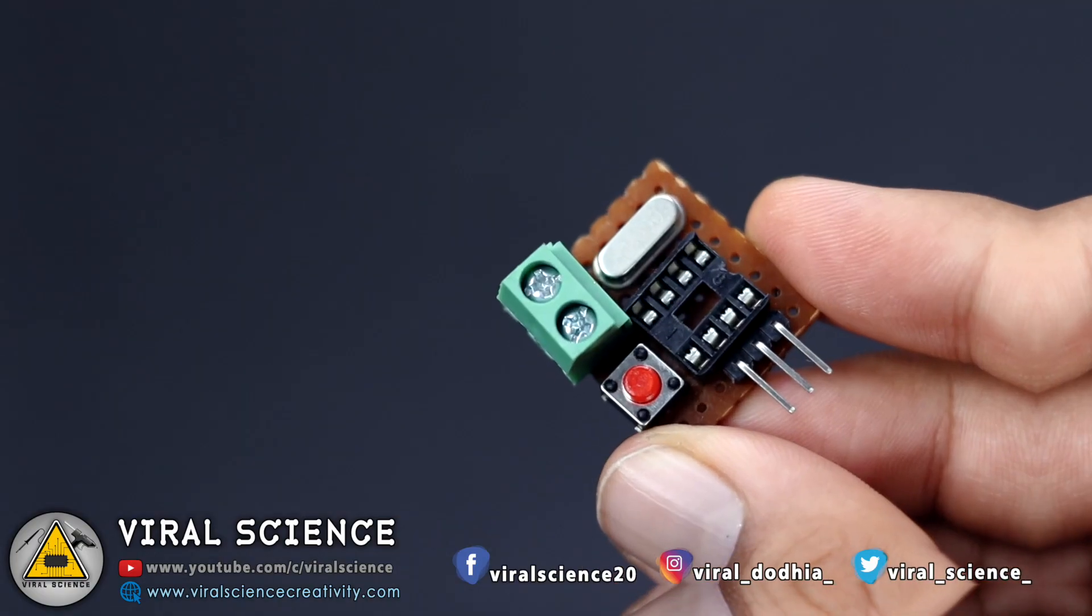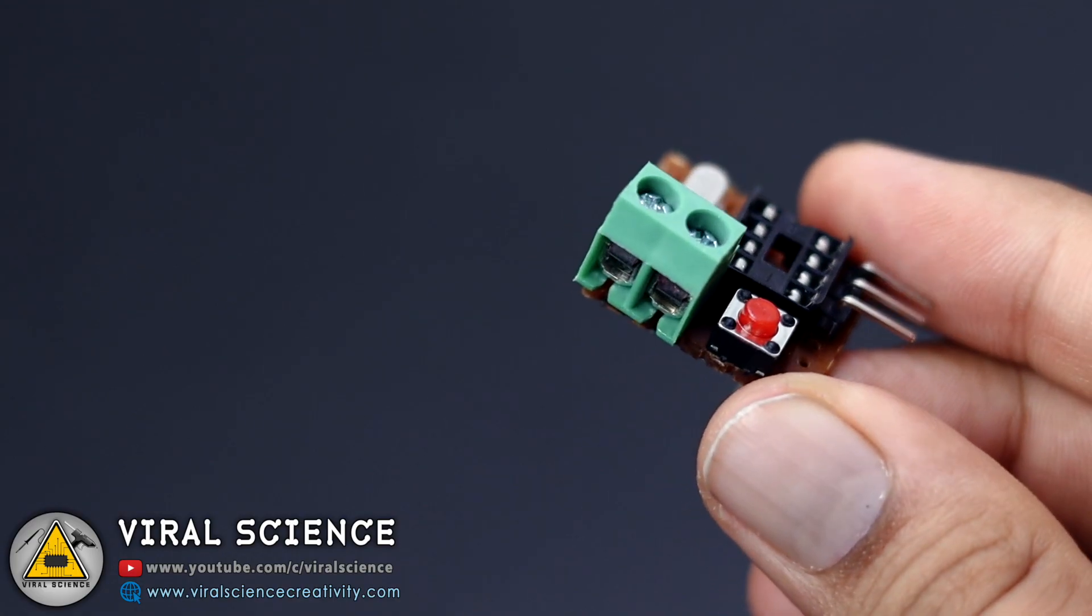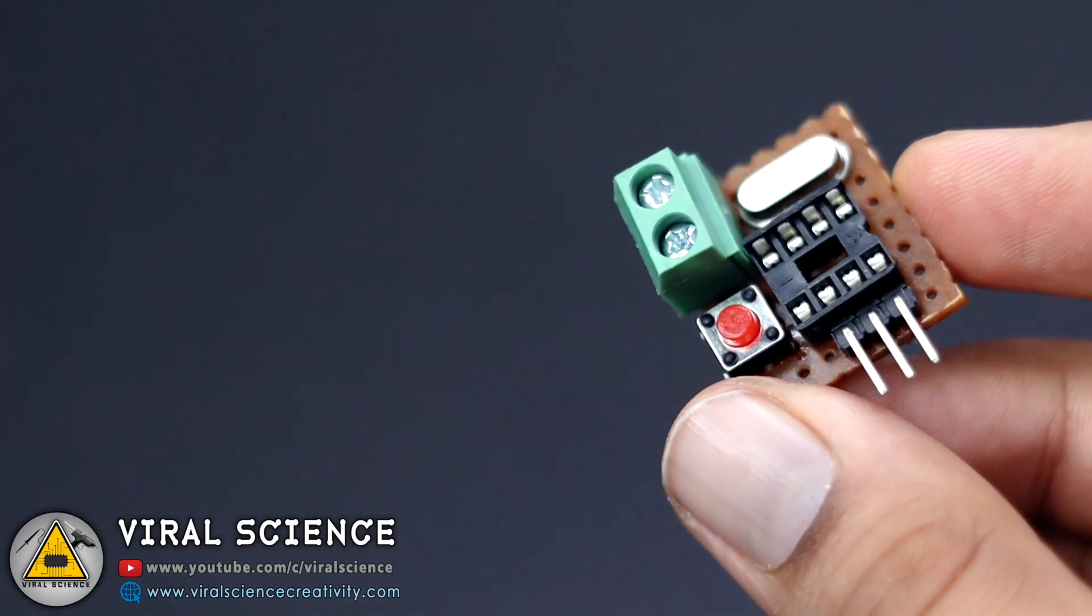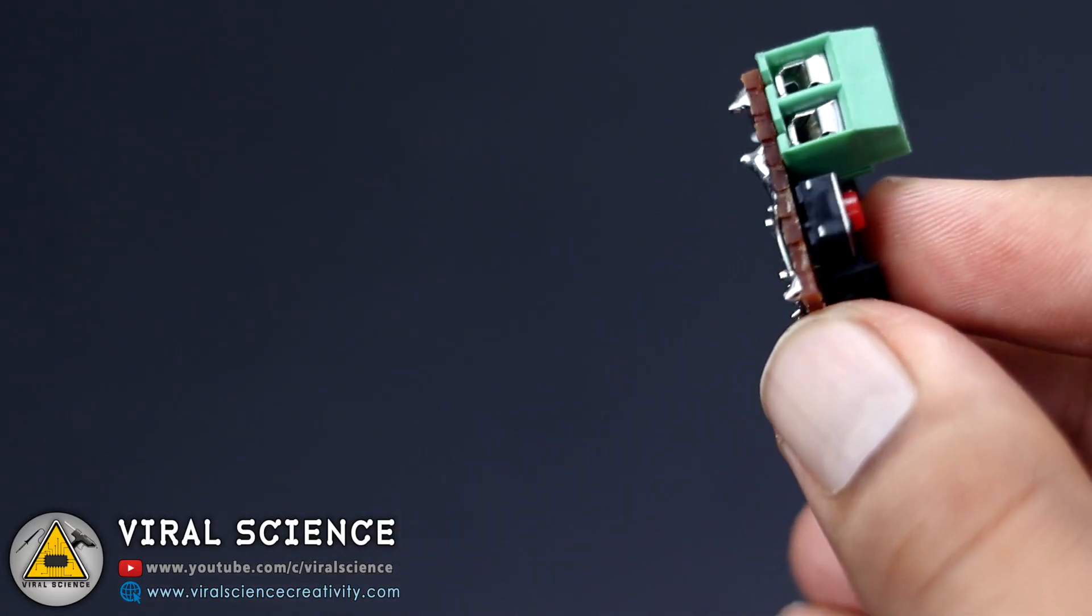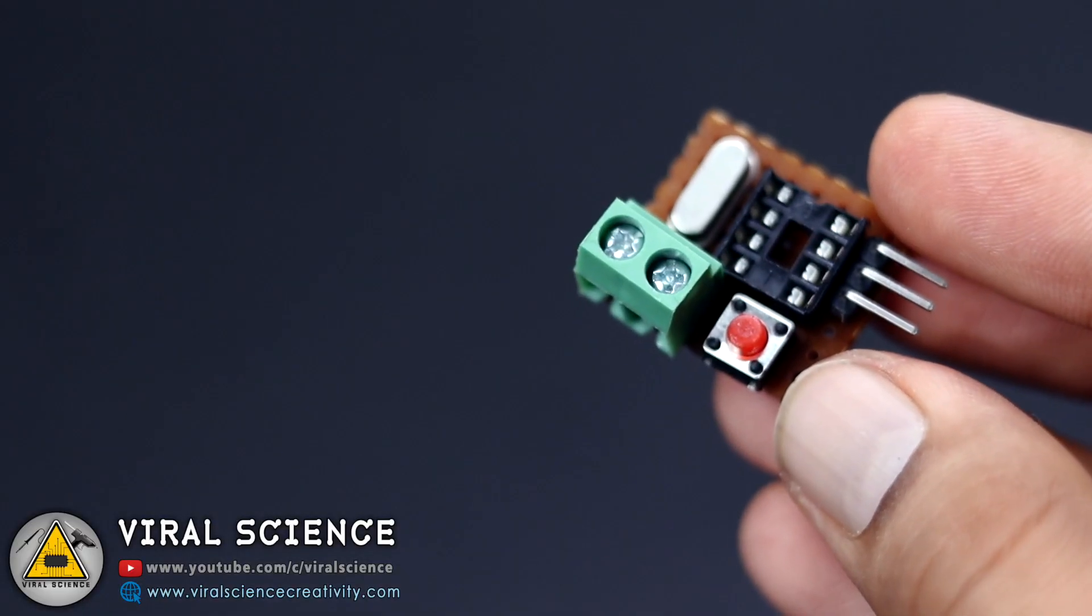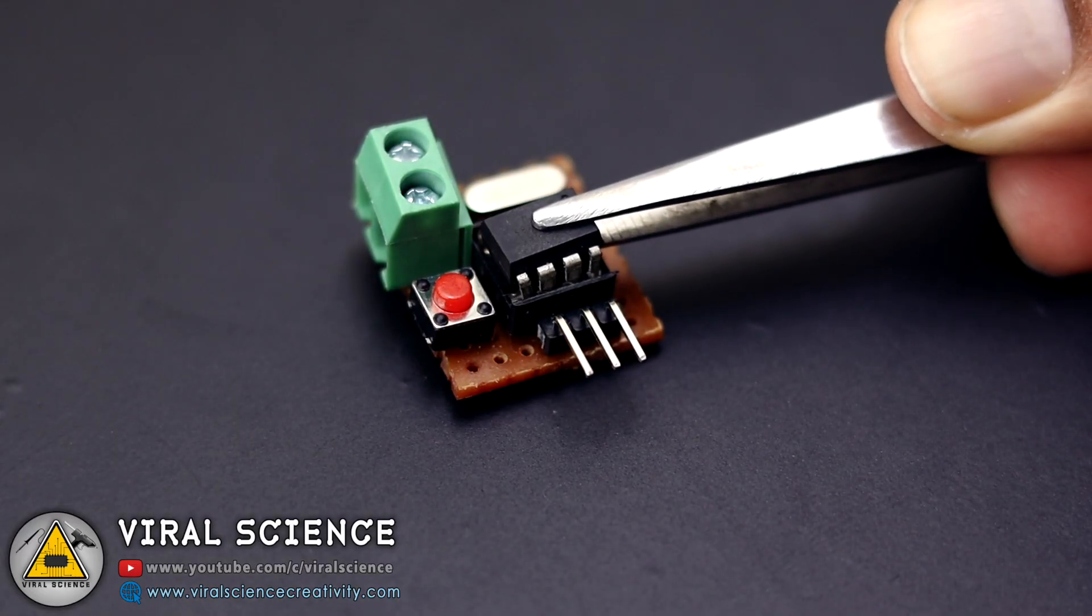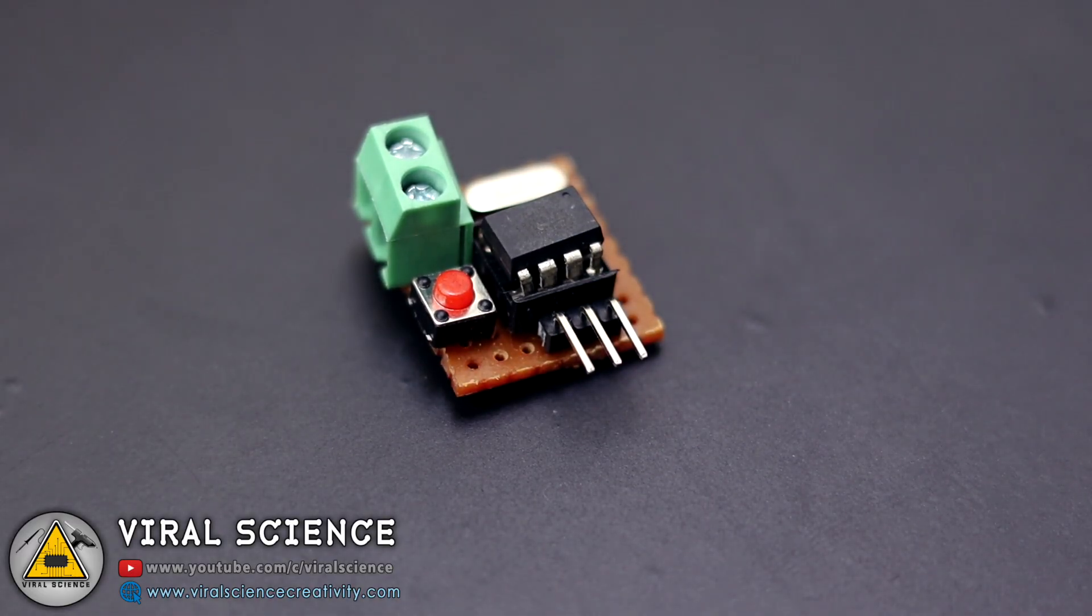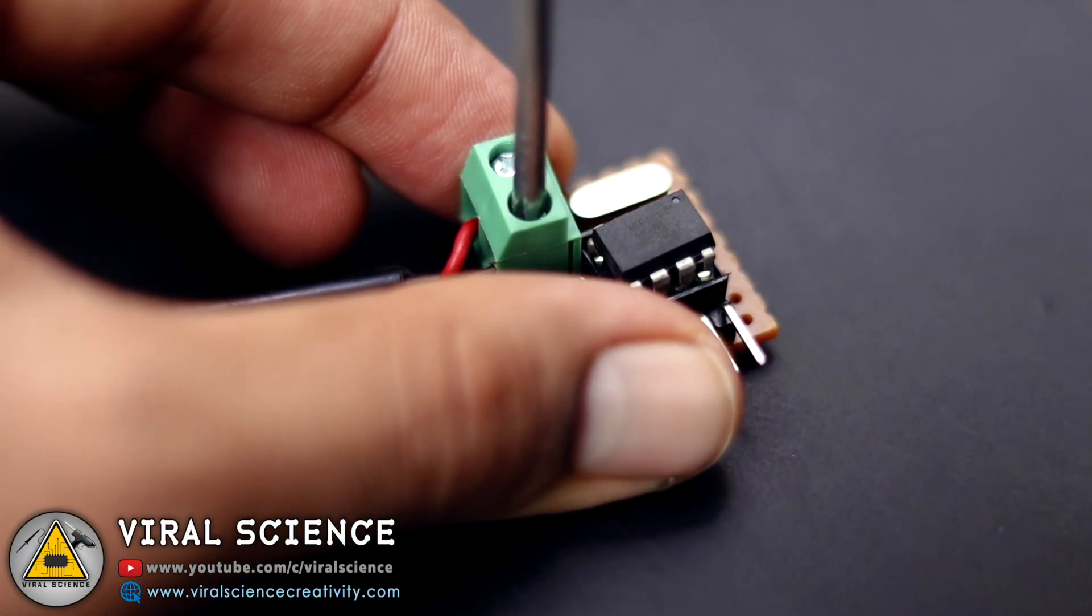I've used a very small piece of PCB board and assembled all the components on it, soldering according to our circuit diagram. Now we just have to connect the power supply and LED strip. First, connect the programmed ATiny85, then connect the 5-volt power supply.